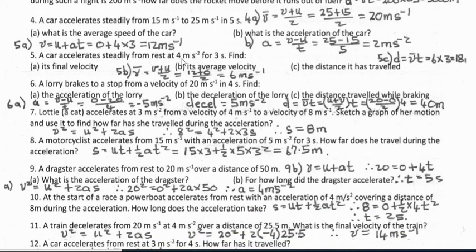Question 5a: a car accelerates steadily from rest at 4 meters per second squared for 3 seconds — find its final velocity. Using v = u + at, this is a SUVAT equation: 0 plus 4 times 3 equals 12 meters per second. Question 5b: what's its average velocity? Final velocity plus initial velocity divided by 2 gives 12 plus 0 divided by 2, which is 6 meters per second.